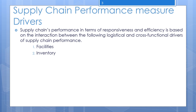Facilities are a key driver of supply chain performance in terms of responsiveness and efficiency. Companies can gain economies of scale when a product is manufactured or stored in only one location. This centralization increases efficiency through cost reduction; however, it comes at the expense of responsiveness, as many customers may be located far from the production facility.